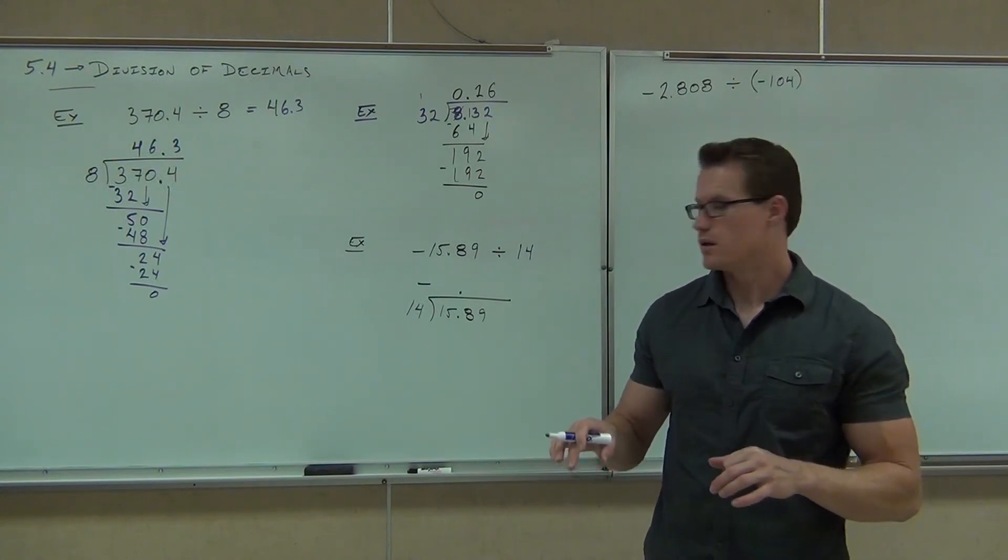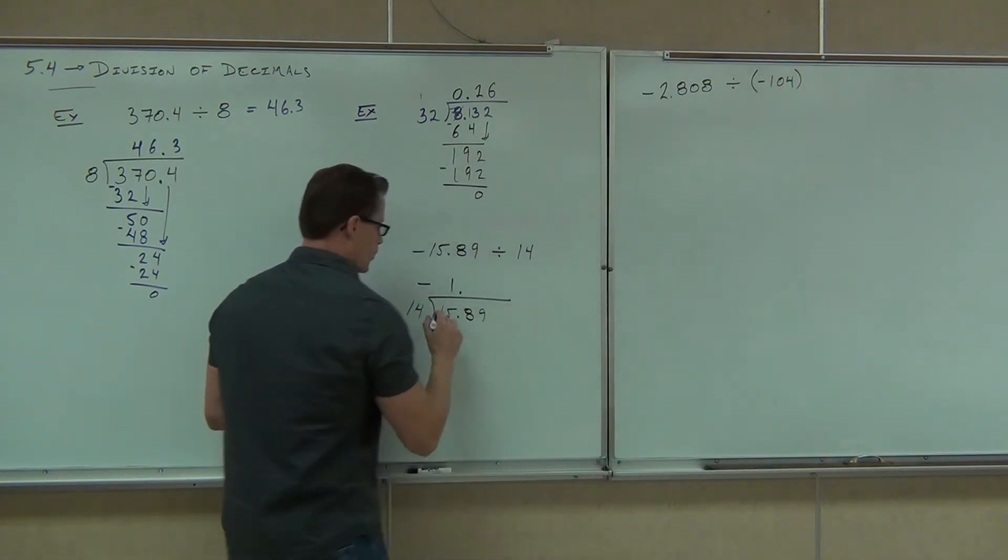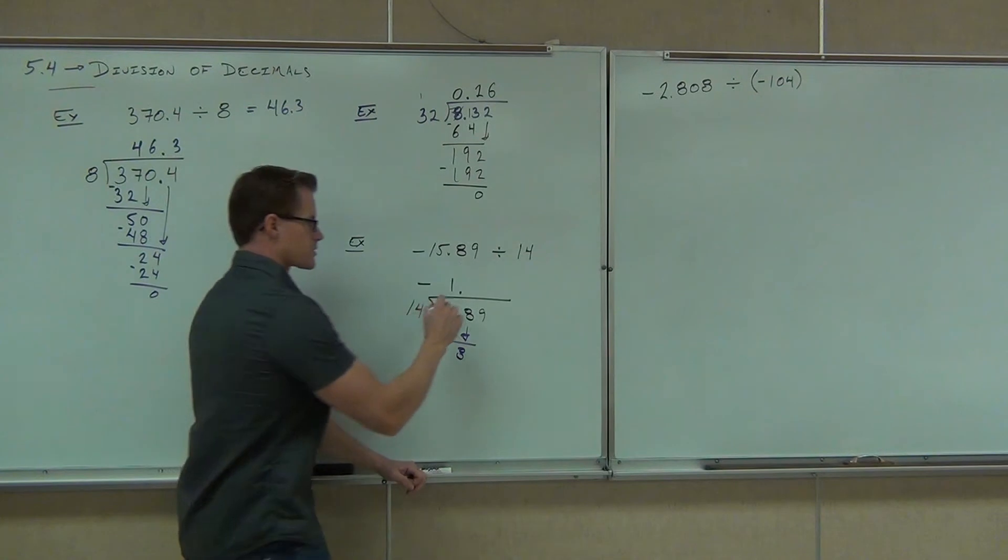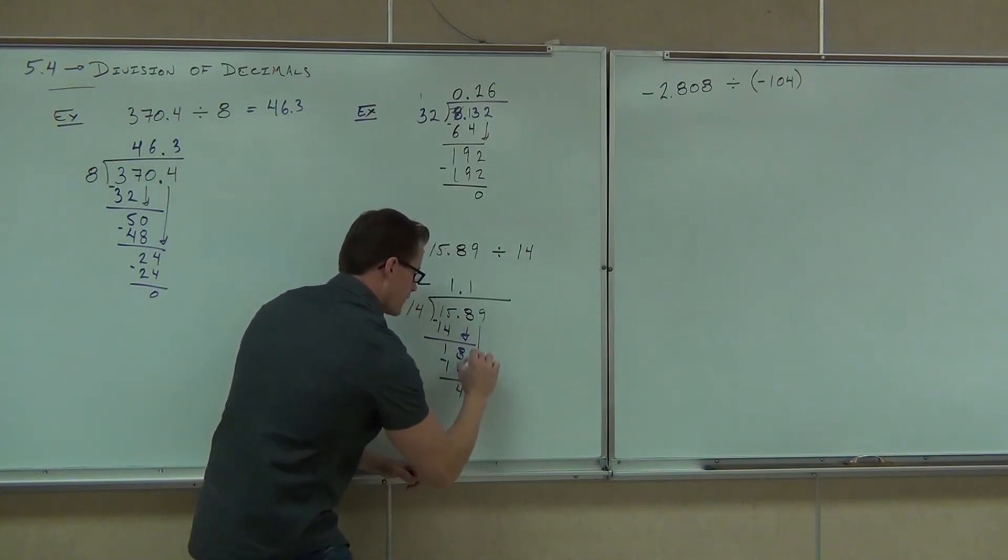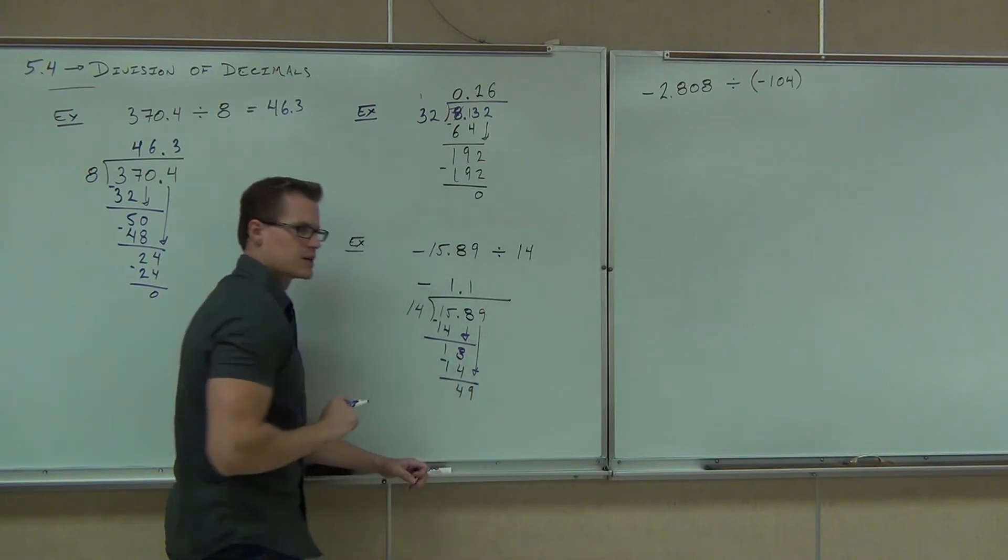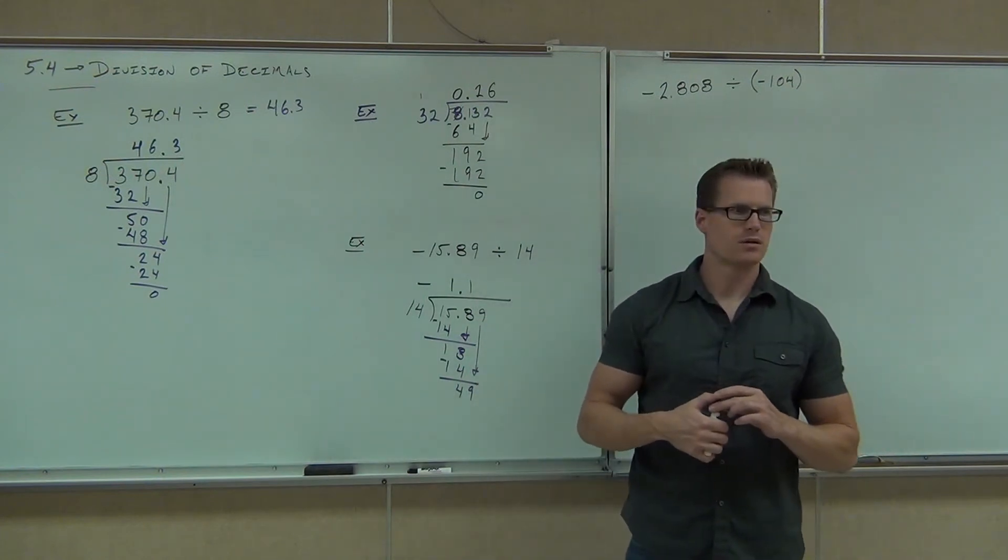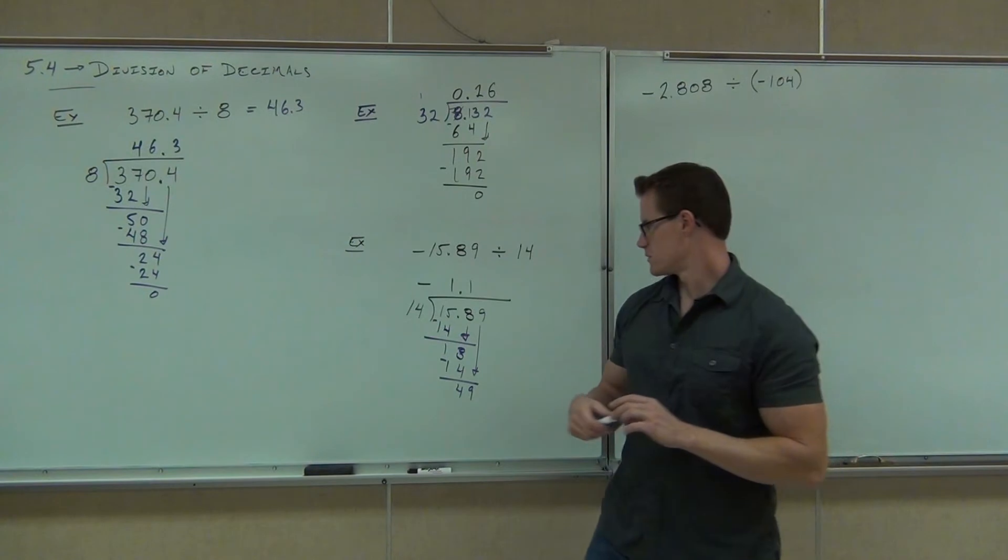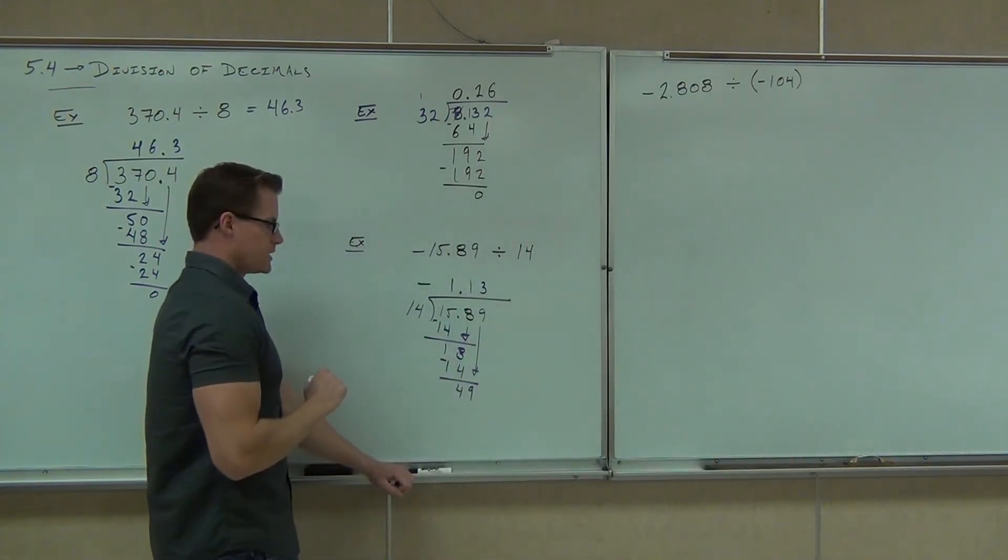Make sure our decimal's in the quotient somewhere. That's important. We don't want to lose track of that thing. Then we're going to start dividing. What's the first number we're going to get? One. Fourteen goes into fifteen how many times? Once. We'll multiply. We'll get fourteen. We'll subtract. We'll bring down the eight. Once. We multiply. We get fourteen. We subtract. We get four.